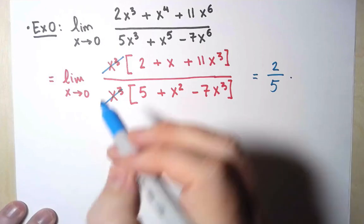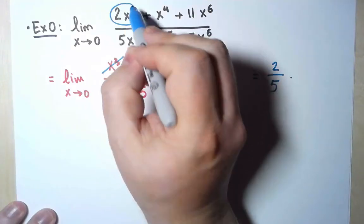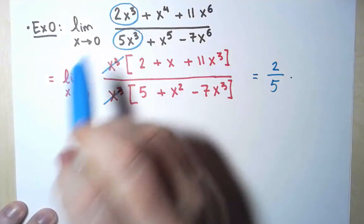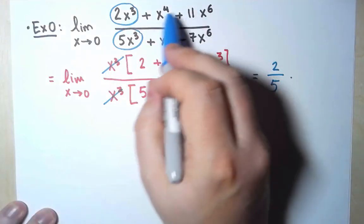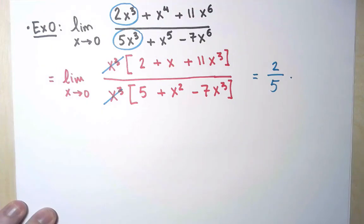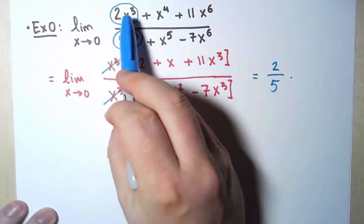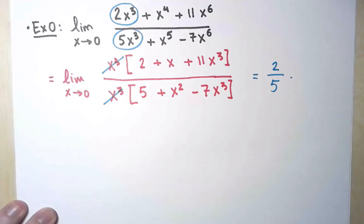But another way to look at this is to say that in the original limit, the only terms that matter are the terms with the smallest exponent. Change any coefficients you want for the other terms, it won't alter the fact that the limit is 2 over 5. So when I have a limit as x approaches 0 of a quotient of polynomials, just keep the term with the smallest exponent. Everything else is irrelevant.